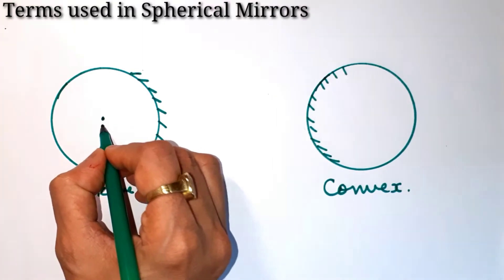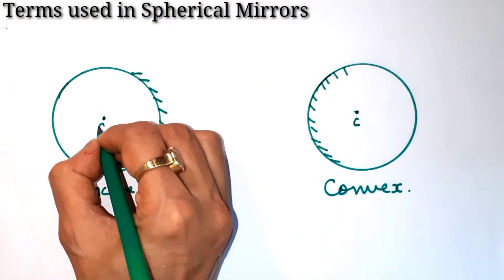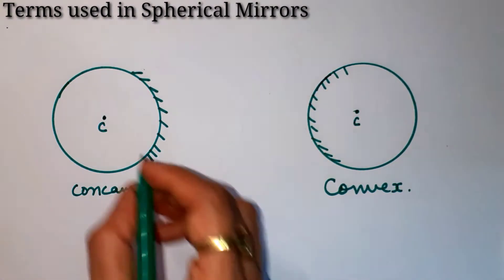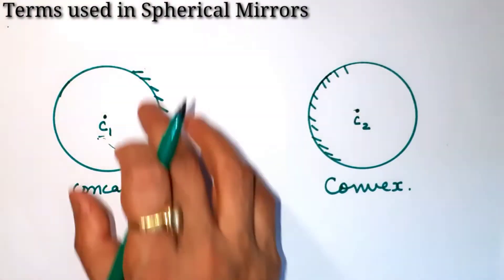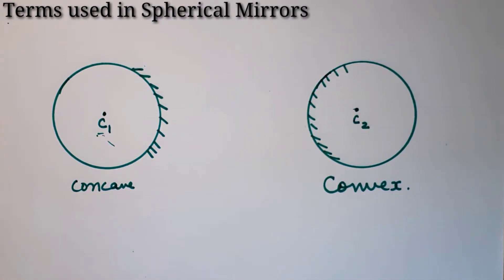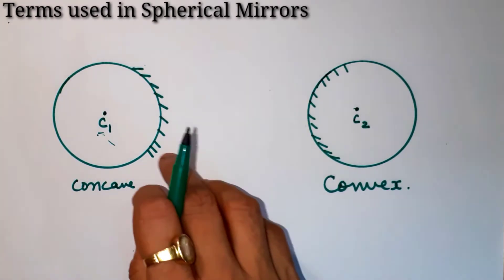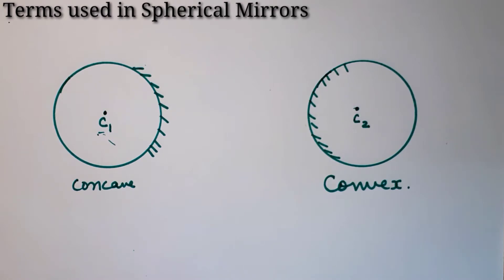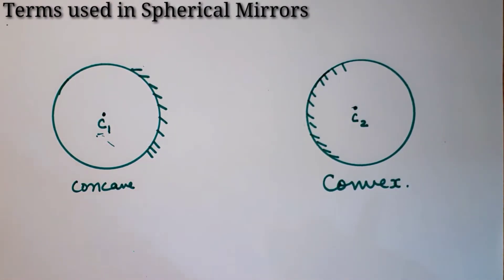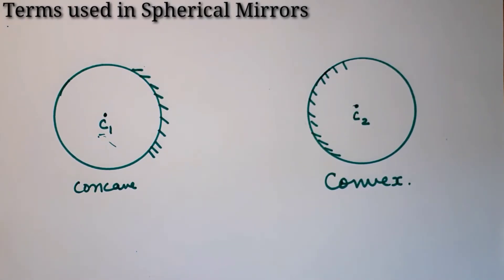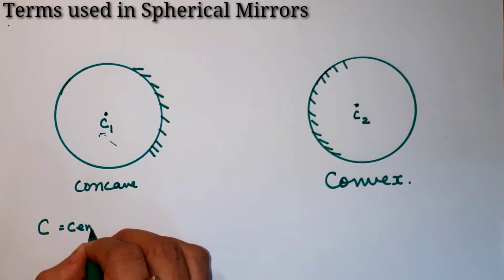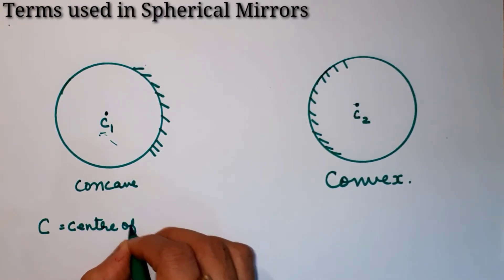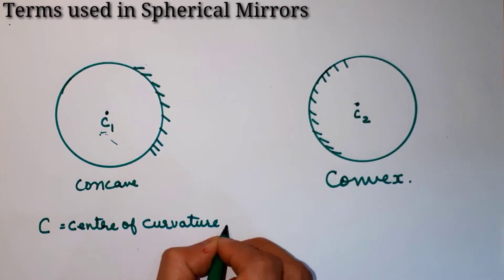The whole sphere's center is said to be the center of curvature, denoted as C1 and C2. When you make a spherical mirror from this sphere, the center of the whole sphere is said to be the center of curvature — for both concave and convex mirrors. It is denoted as C.